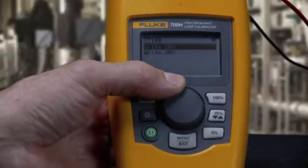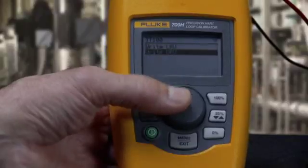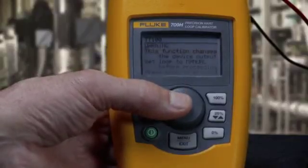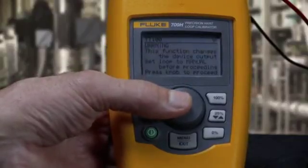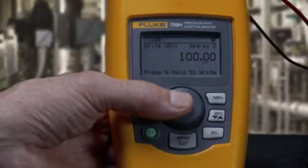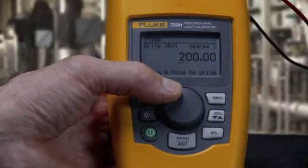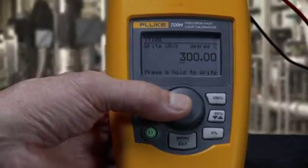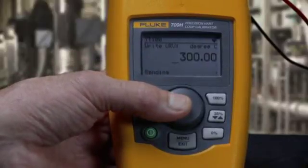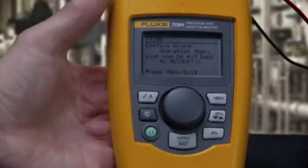The 709 has the ability to rerange a transmitter. Move the cursor to the range point you want to change, like the 100% URV point for example, and hit select. Pressing the thumb wheel changes a decade to update. Rotate the knob to the correct value to change. Press and hold the knob to write to the HART device.